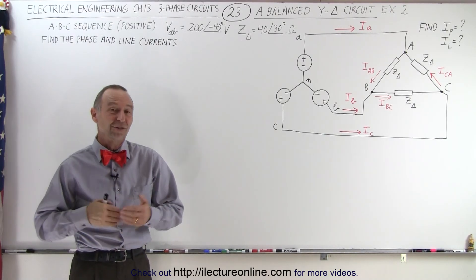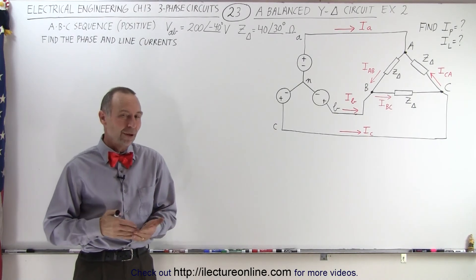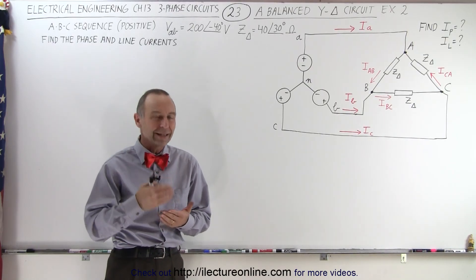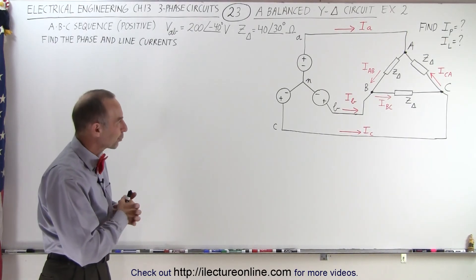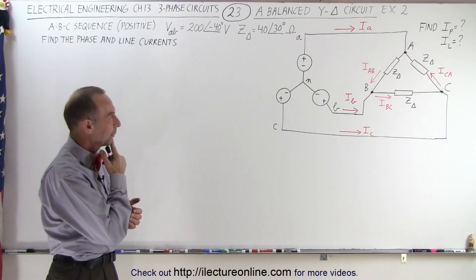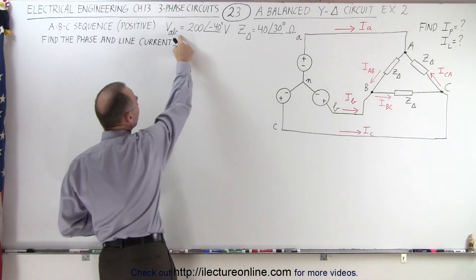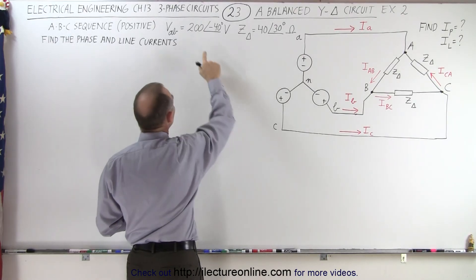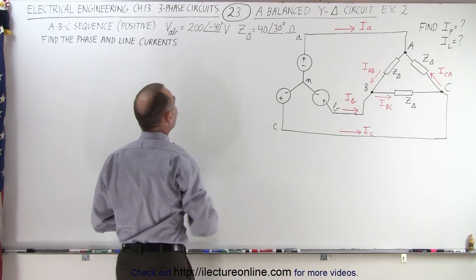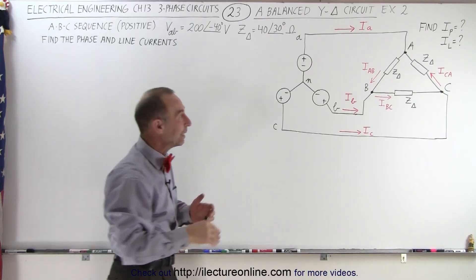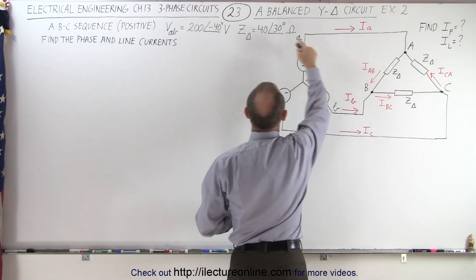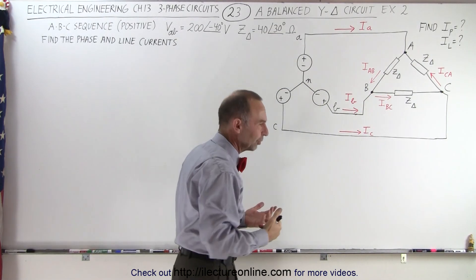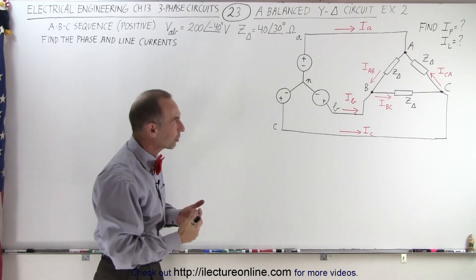Welcome to our lecture online. Here's our second example of how to find the phase currents and the line currents in a Y-delta, 3-wire, 3-phase circuit. We're given that the voltage between A and B, which is the line voltage, is equal to 200 volts with a phase angle of minus 40 degrees, and the load impedance is 40 ohms with a phase angle of positive 30 degrees, indicating an inductive load.